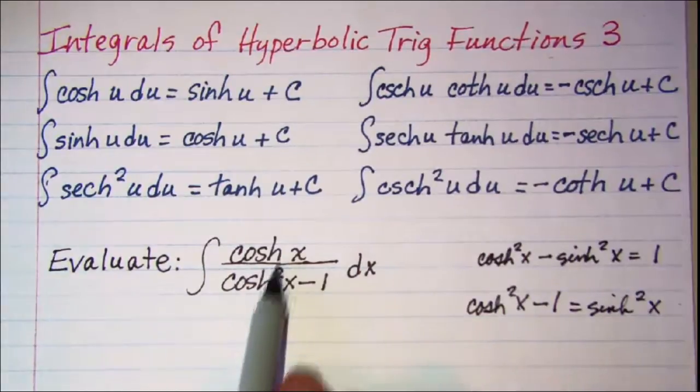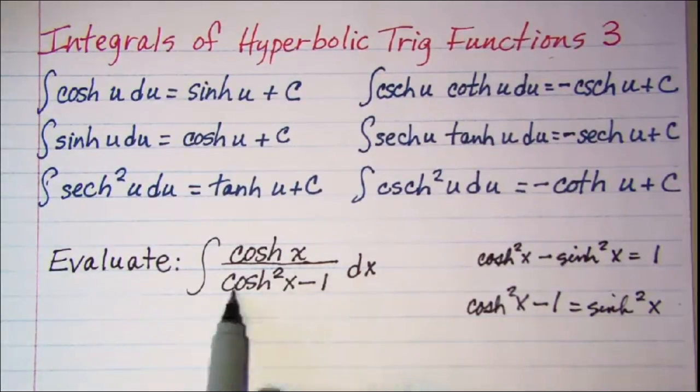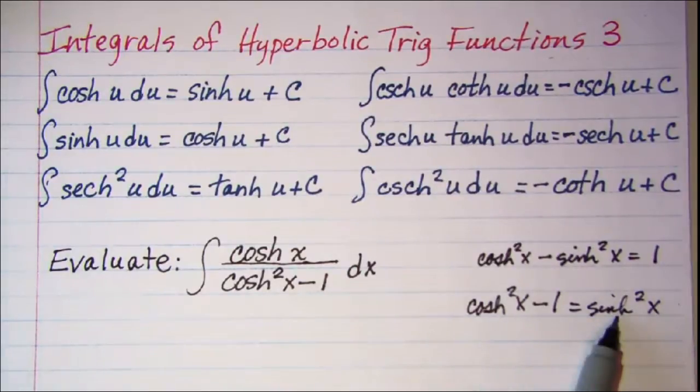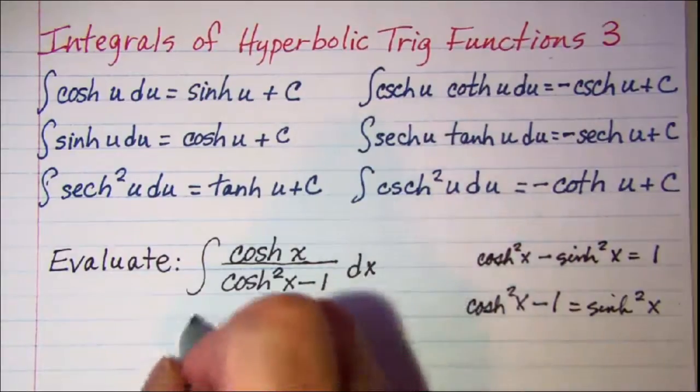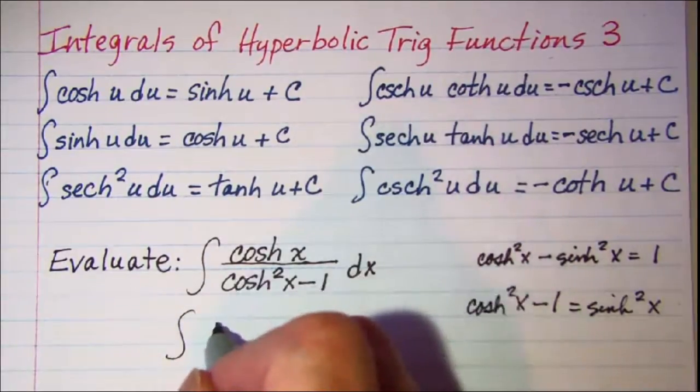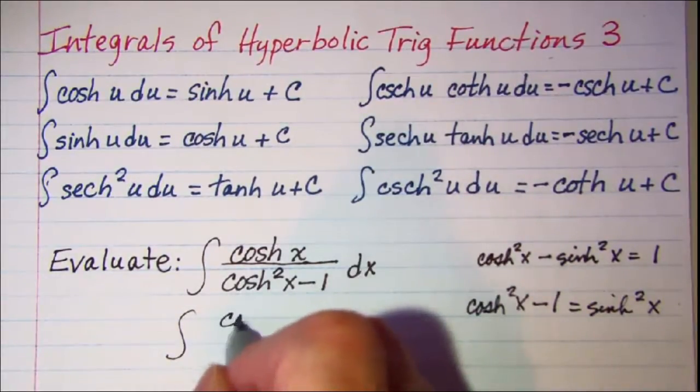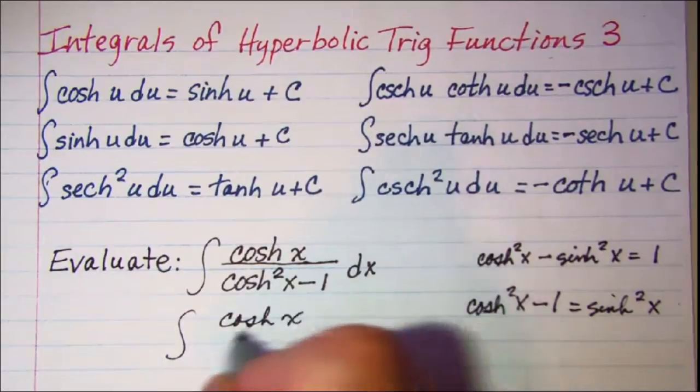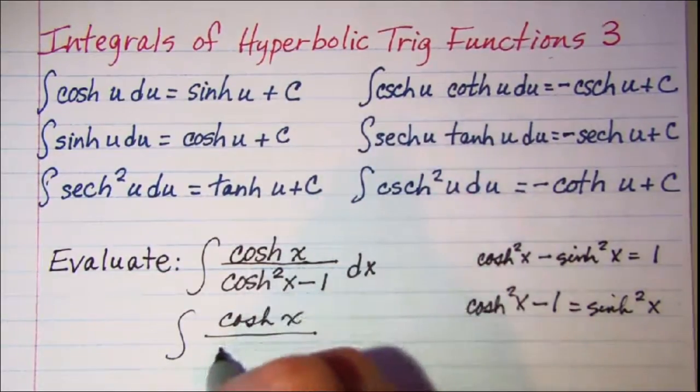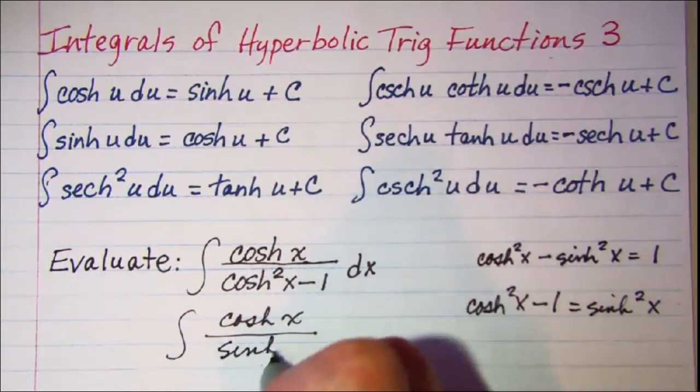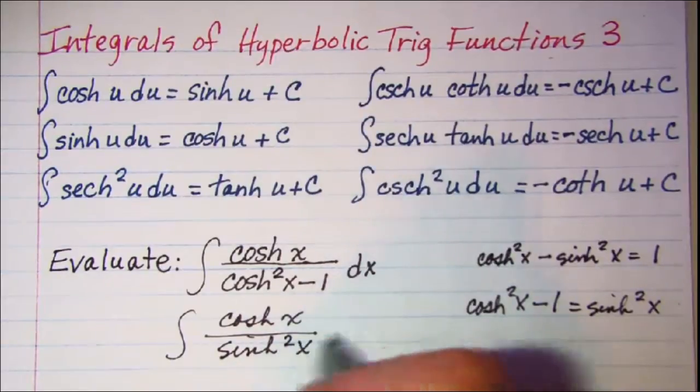So now I can rewrite this denominator and replace this binomial with hyperbolic sine squared. So the problem now is the integral of the hyperbolic cosine of x divided by the hyperbolic sine squared of x dx.